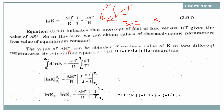The value of ΔH° can be obtained if we have values of K at two different temperatures. ΔH° can be numerically calculated if we have K at two different temperatures. In the previous lecture, this equation was integrated without limits. Now this equation — equation 3.92 — will be integrated with definite limits. The equation is: d(ln K) = ΔH°/R × dT/T².